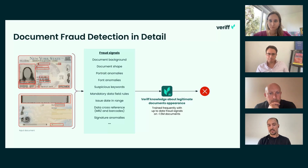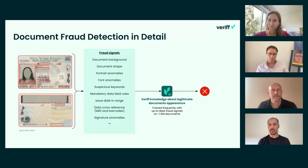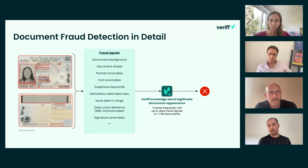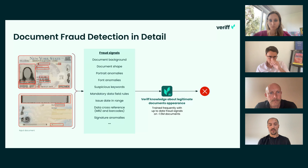This level of transparency is important because, on one hand, it allows us to improve the model little by little by knowing which features perform best or worst. But it also allows us to inform our fraud operations teams and specialists about what fraud the model is finding, helping them develop new monitoring strategies for those cases.